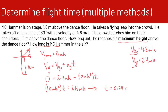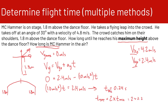Now we want to know how long MC Hammer is in the air overall. This projectile motion is symmetrical because he's launched from 1.8 meters and lands at 1.8 meters. So total time equals 2 times the time to max height: t total equals 2 times 0.24 seconds, giving a total time of 0.48 seconds. Time to max height is 0.24 seconds, and total hang time is 0.48 seconds.